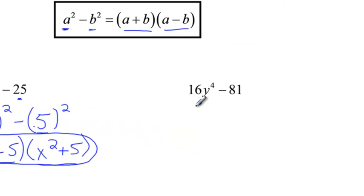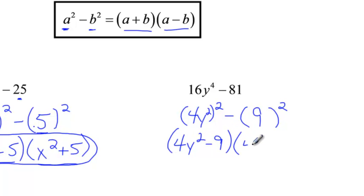Now, over here, same idea. I want to say something squared minus something squared. Well, what squared is 16? 4. What squared is y to the fourth? y squared. So 4y squared goes there, and then 9 goes here, because 9 squared is 81. Again, I get 4y squared minus 9, and 4y squared plus 9.